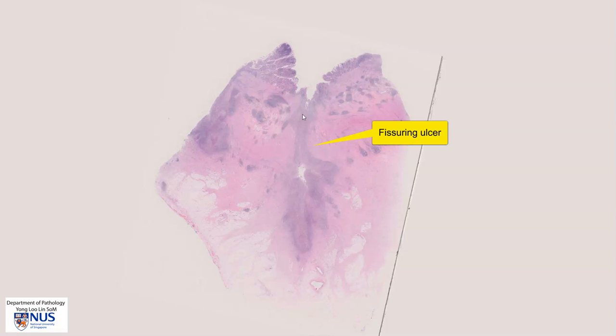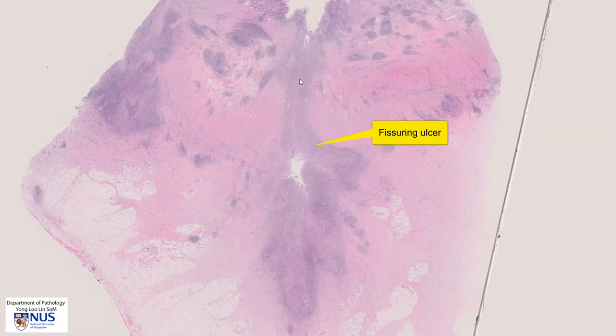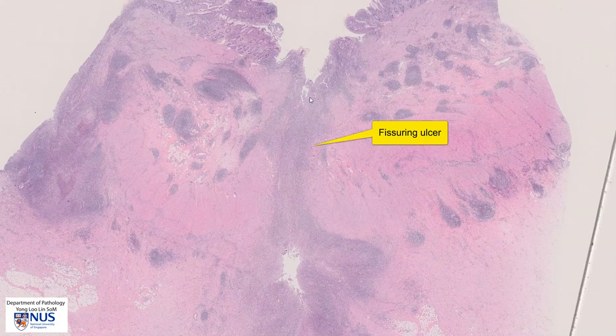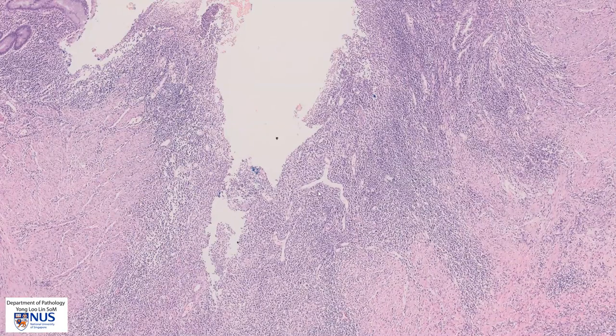It goes through the submucosa, through the muscularis propria, and right into the subserosa. This is known as a fissure or a fissuring ulcer. We can see here the wall of the ulcer, which is composed of inflamed granulation tissue, and we can see inflammation all the way down into the subserosal layer.